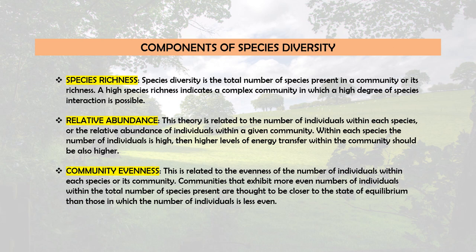The second parameter is relative abundance, which deals with the number of individuals within each species, or the relative abundance of individuals within a given community. If species richness is high and higher levels of energy transfer are possible, then if the number of individuals within each species is also high, energy transfer within the community should be higher still. Here we deal with the same species but with a higher number of individuals.